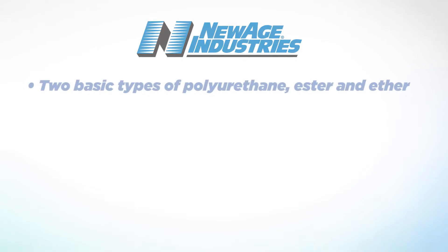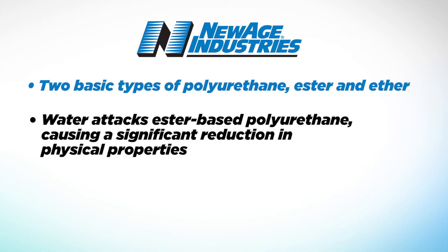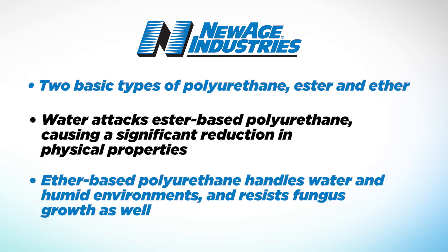There are two basic types of polyurethane, ester and ether, and they have some important differences. Water attacks ester-based polyurethane, causing a significant reduction in physical properties. Ether-based polyurethane handles water in humid environments and resists fungus growth as well.